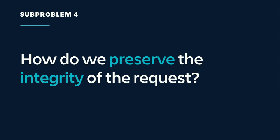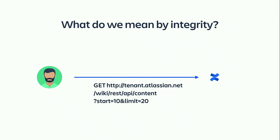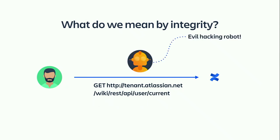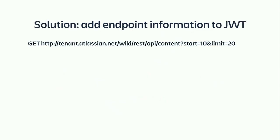Our final subproblem: how do we preserve the integrity of the request? When we make a request, we have information like the endpoint, the request parameters, and maybe the POST payload. How do we make sure that data comes through without being tampered with? An evil hacking robot shouldn't be able to modify anything, including the endpoint or the request parameters. The solution is: we encode all of our request information into the JWT token.